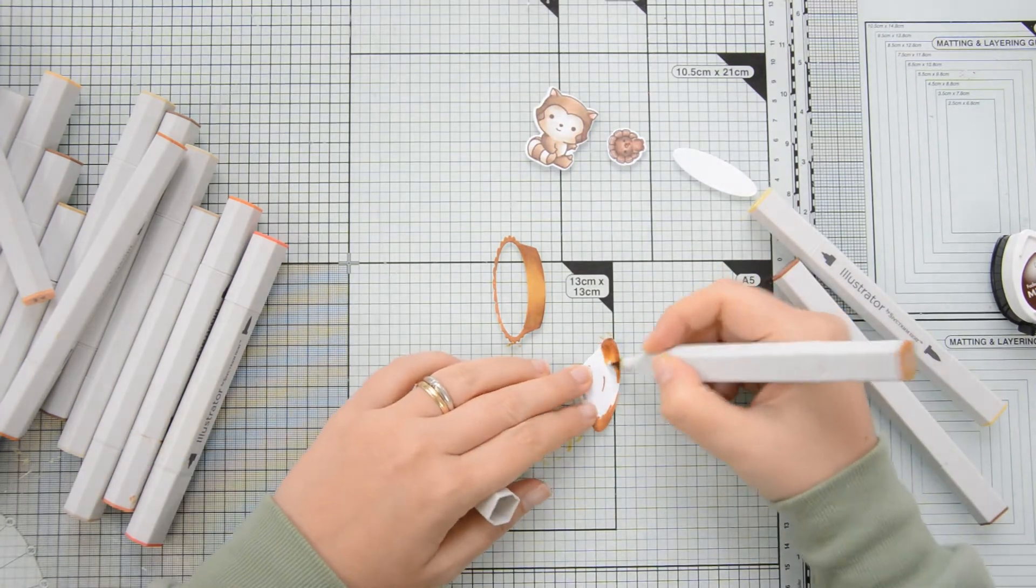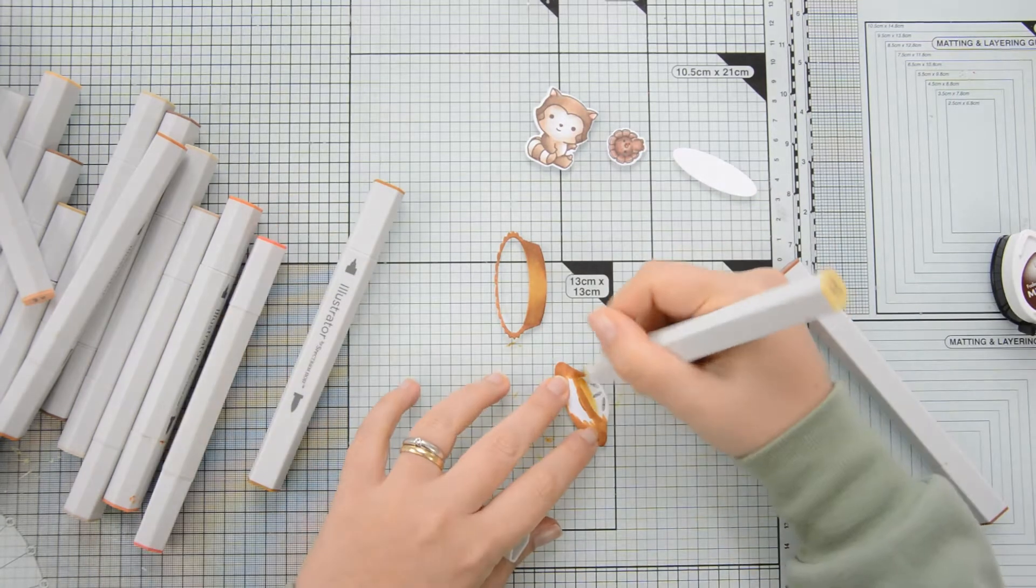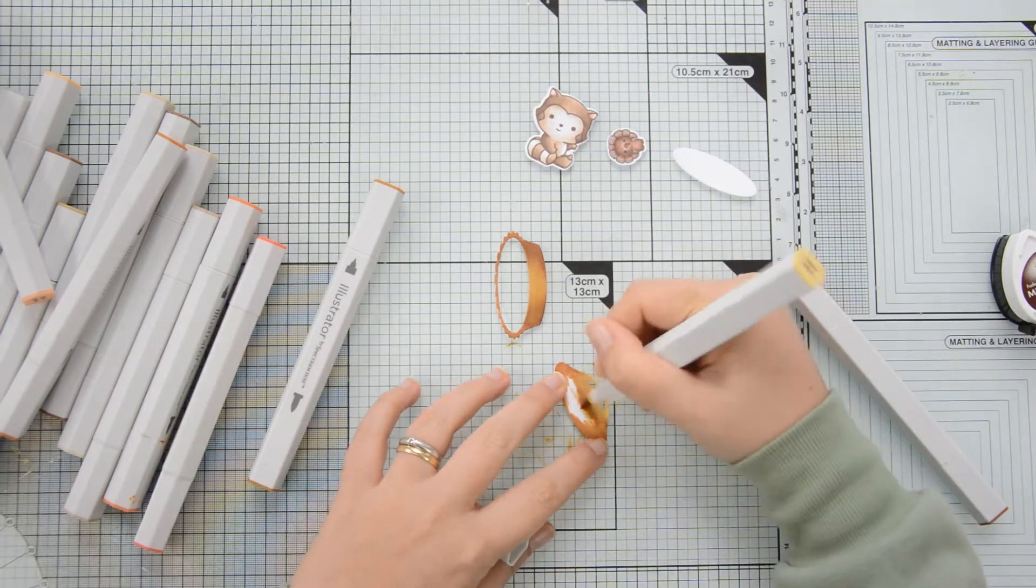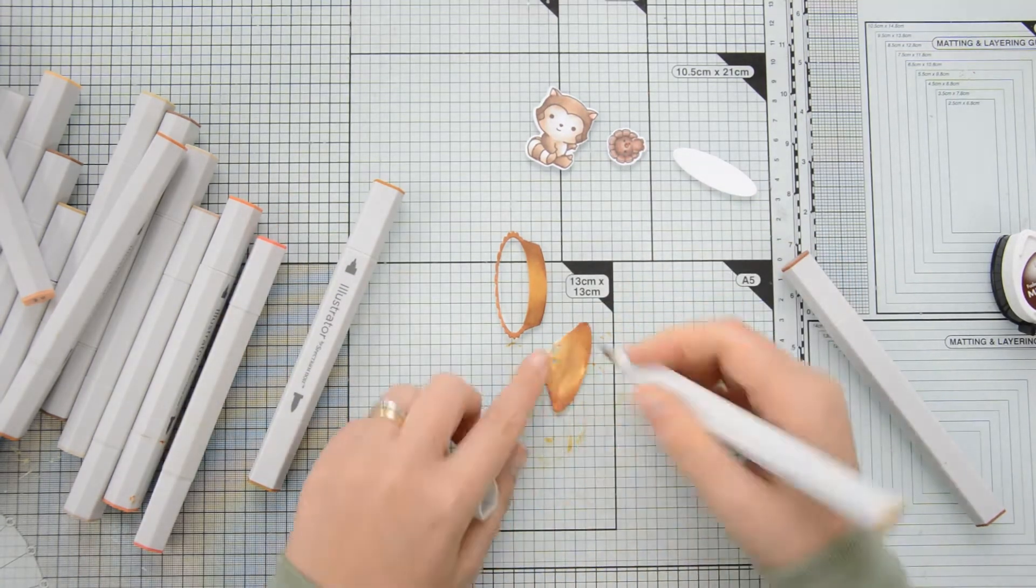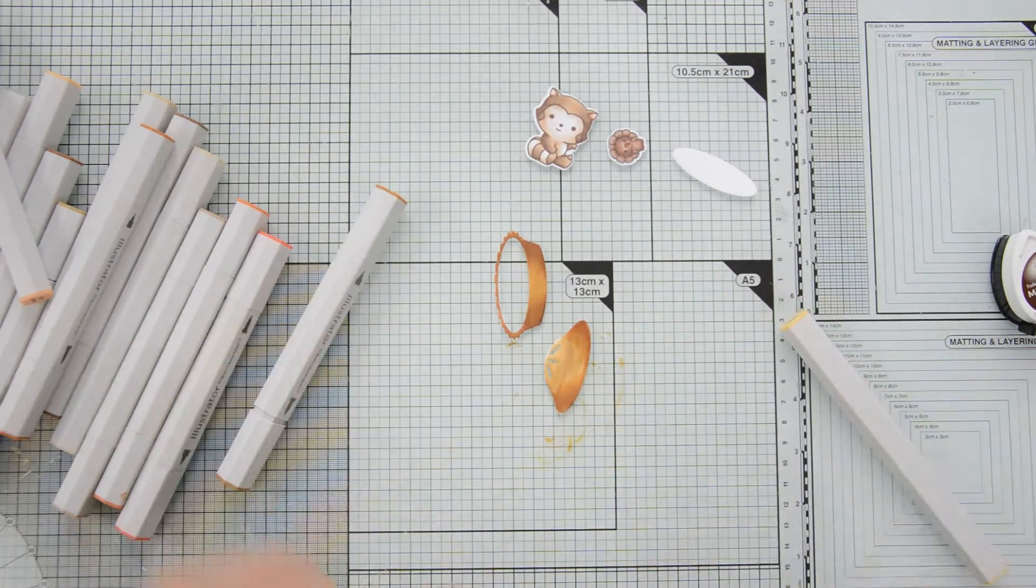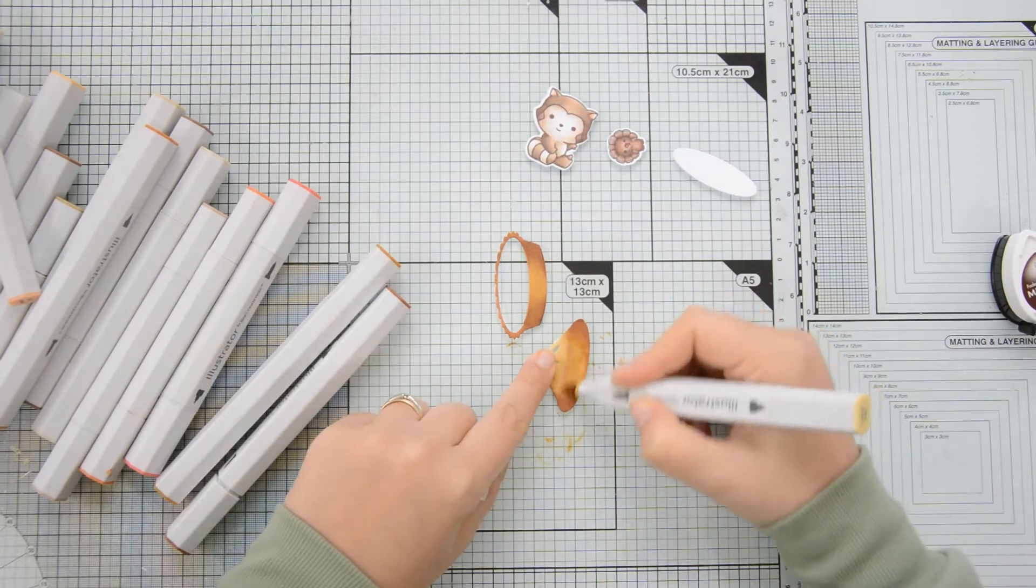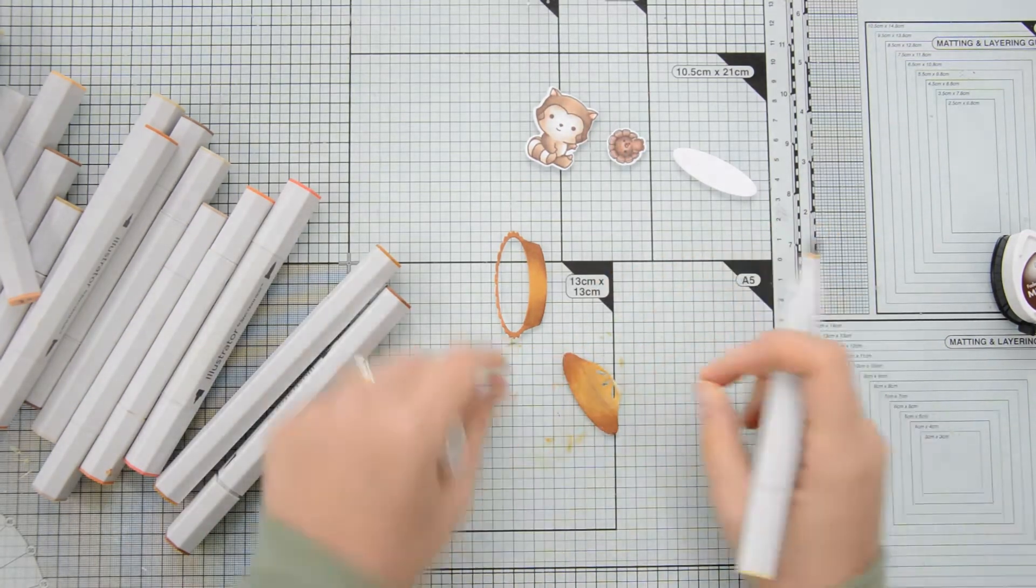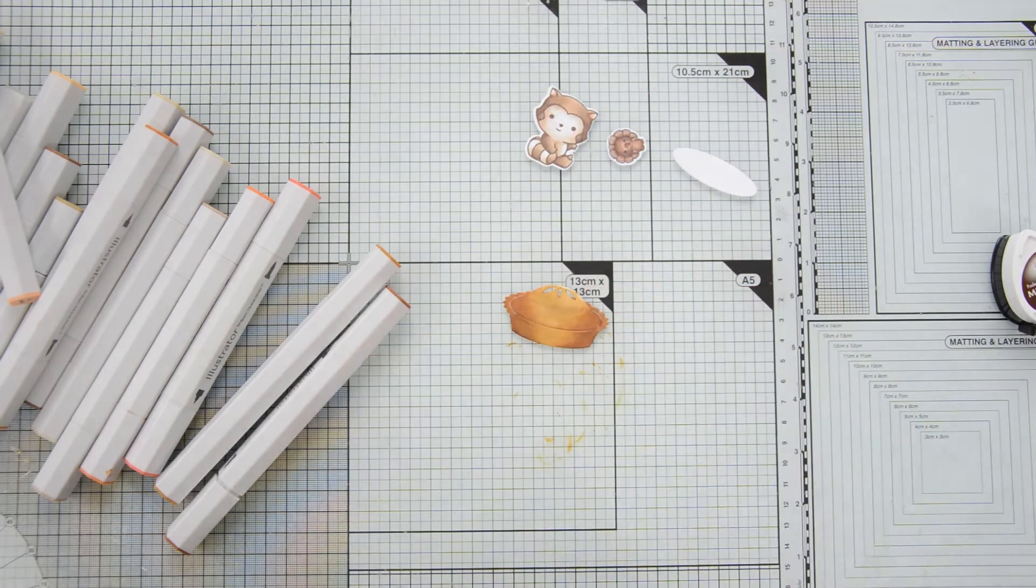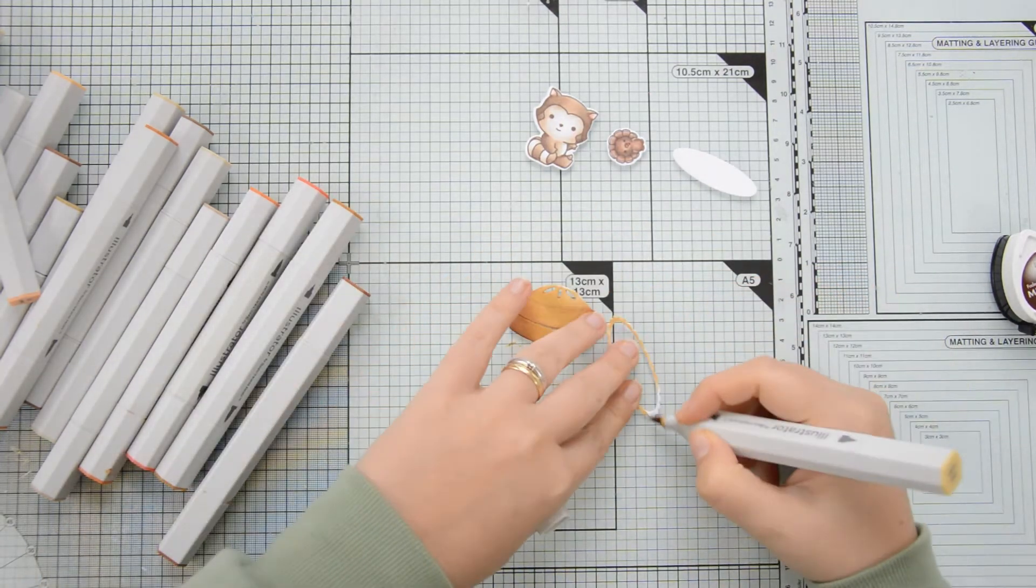This by the way is a standalone die set but there is also a stamp set with coordinating dies which matches very closely these die set here. These are all part of the latest release by Sugar Pea Designs and are available like all the products that I'll be using today on the Sugar Pea Designs store and if you're interested I will have a list of the products I used with links in the description box down below.